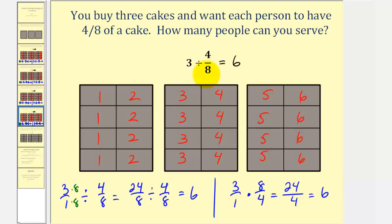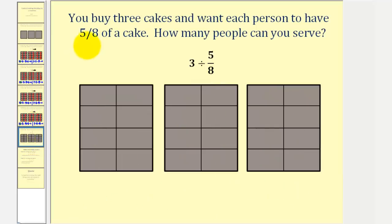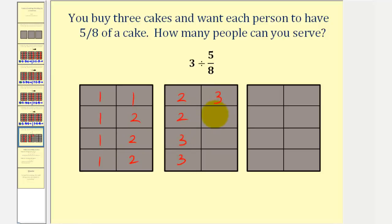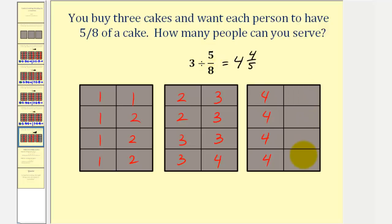Now let's look at one more example that's a bit more challenging. Each person is to have five-eighths of a cake. We want to determine what is three divided by five-eighths. It takes five pieces to make one serving: there's one serving, two servings, three servings, four servings. Notice there's not enough to make a complete fifth serving. Because one serving is five pieces and we have four pieces remaining, our quotient is four and four-fifths. It's four-fifths because it takes five pieces to make one serving and we have four of the five pieces.